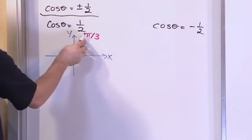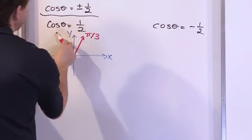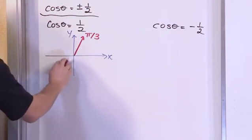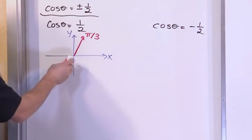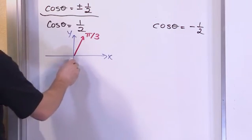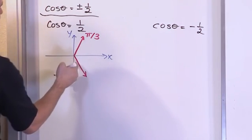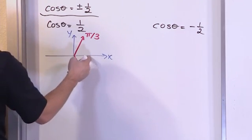So if we move over to this quadrant and ask ourselves, does this angle work? It doesn't because cosine is negative here. If we move to this quadrant and ask if this angle is going to work, it doesn't because cosine is negative over here. But when we move over to this quadrant, this 60 degree angle, the 160 degrees from the x-axis.